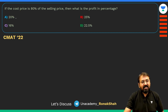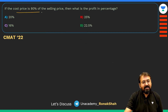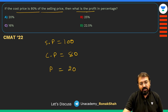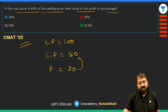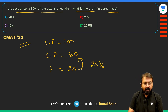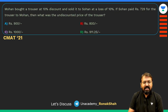This is a very simple CMAT 2022 question. The cost price is 80% of the selling price. If selling price is 100, then cost price is 80, so profit is 20. The profit percentage is therefore 25% — you are making one-fourth profit. A 10-second question.